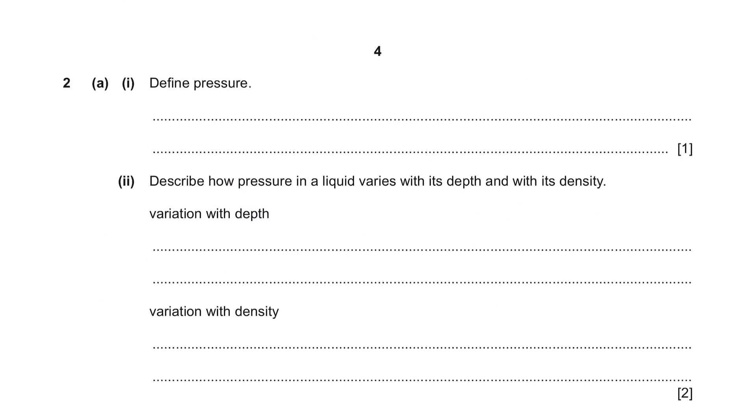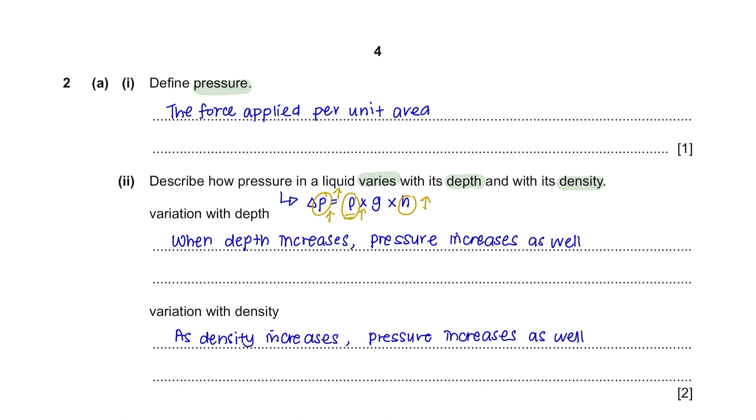Question 2 A, Part 1. Define pressure. Pressure is defined as the force applied per unit area. Part 2. Describe how pressure in a liquid varies with its depth and with its density. The pressure due to column of liquid can be calculated using the equation density multiplied by gravitational acceleration multiplied by change of height. This means that as your height increases, your pressure will also increase. And if your density increases, your pressure increases as well.